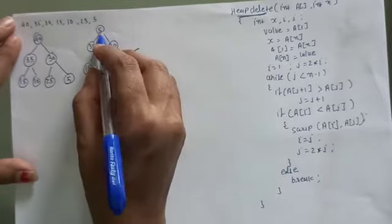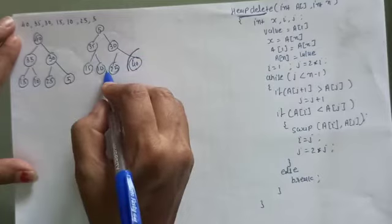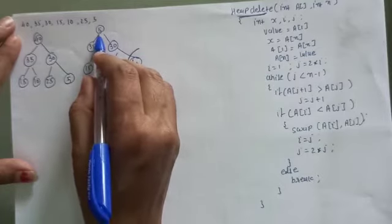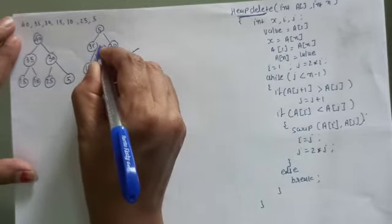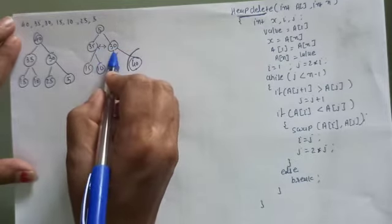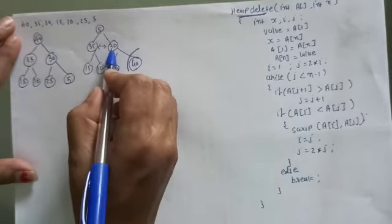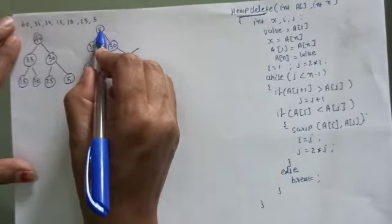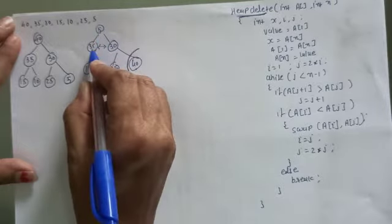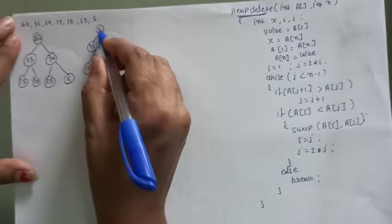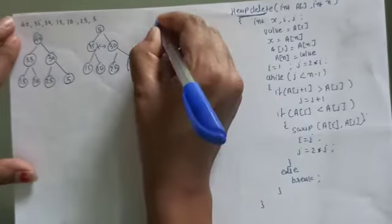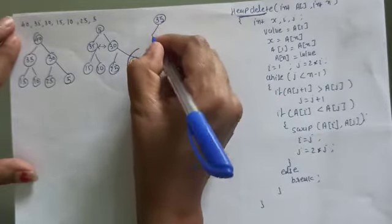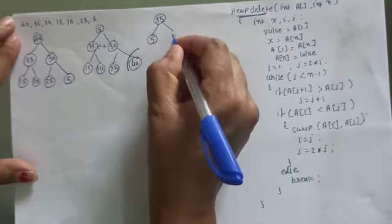Now this violates the constraint of a max heap, so we have to move 5 to its correct position. For that, we compare the left child and right child: 35 and 30. Whichever is greater is compared with the ancestor. Here 35 is greater than 30. We compare 35 and 5 — since 5 is smaller than 35, 35 comes to the place of 5, and 5 moves down.